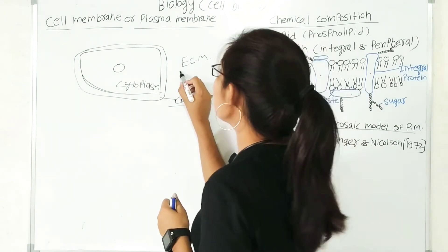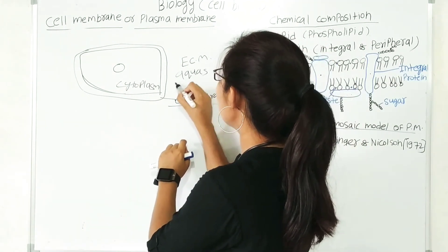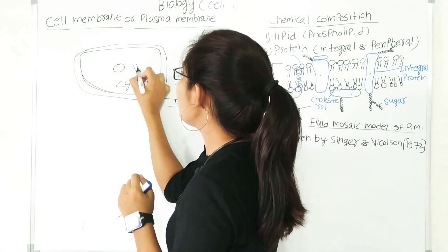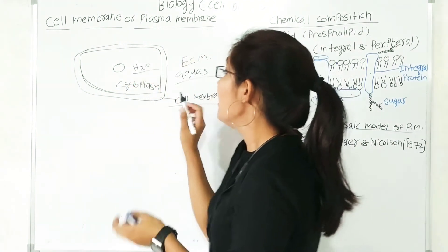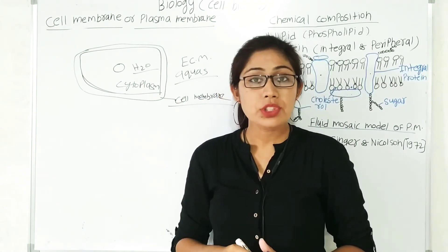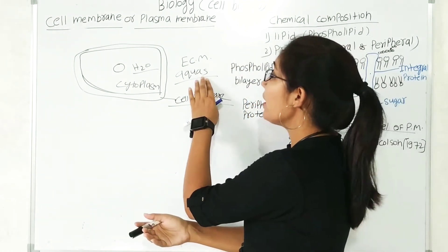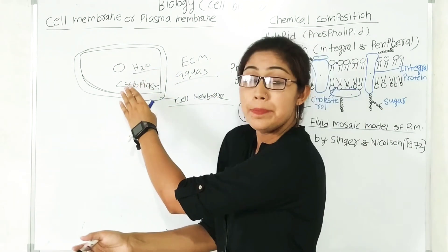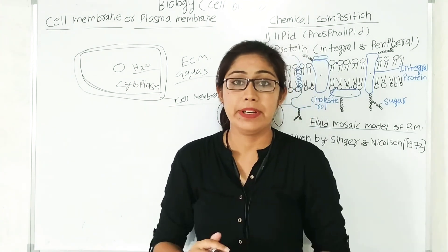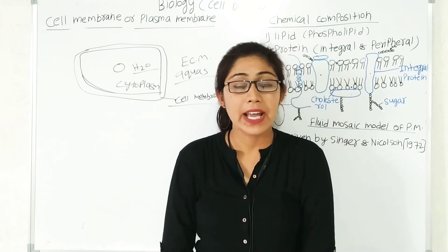The cell membrane is the outermost covering of a cell that separates the extracellular matrix from the cytoplasm. The extracellular matrix is an aqueous compartment — meaning it contains water. The cytoplasm also has water in it. So the plasma membrane is the outermost covering of the cell that separates the extracellular aqueous compartment from the cytoplasmic aqueous compartment.